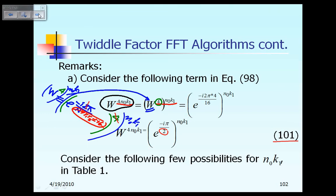Essentially, equation 101 says that W raised to the power of 4N0K1 is equal to that right-hand side. The value for that left-hand side will depend on the value of N0 and the value of K1 that you provide.